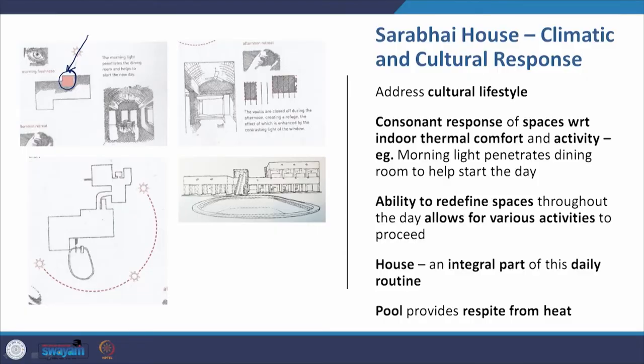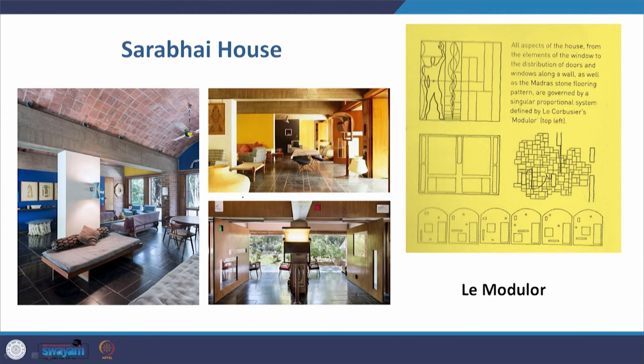The house in the case of Villa Sarabhai becomes an integral part of the daily routine of the occupants, and the pool also provides respite from the heat. The amazing part is the scale that Le Corbusier used — the overall proportions with regard to height, the size of the base, and even the grid formed by the Madras stone on the floor — all based on the Modulor proportional system that he had developed.